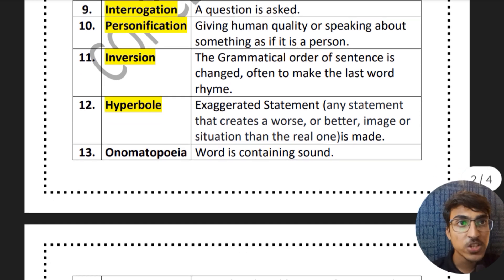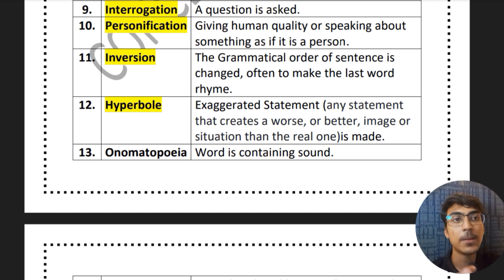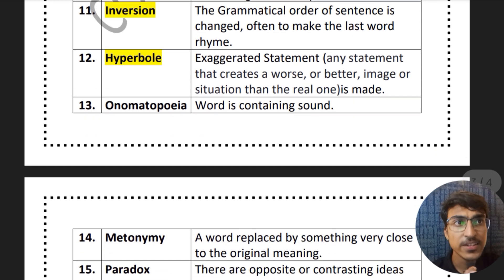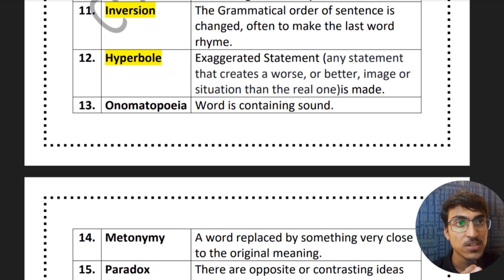Then inversion — the grammatical order of a sentence is changed, often to make the last word rhyme, so the grammatical order changes and the sentence takes a rhyming form. Then hyperbole — an exaggerated statement. Exaggerated means any statement that creates a worse or better image or situation than the real one, just like an imaginary situation is created.